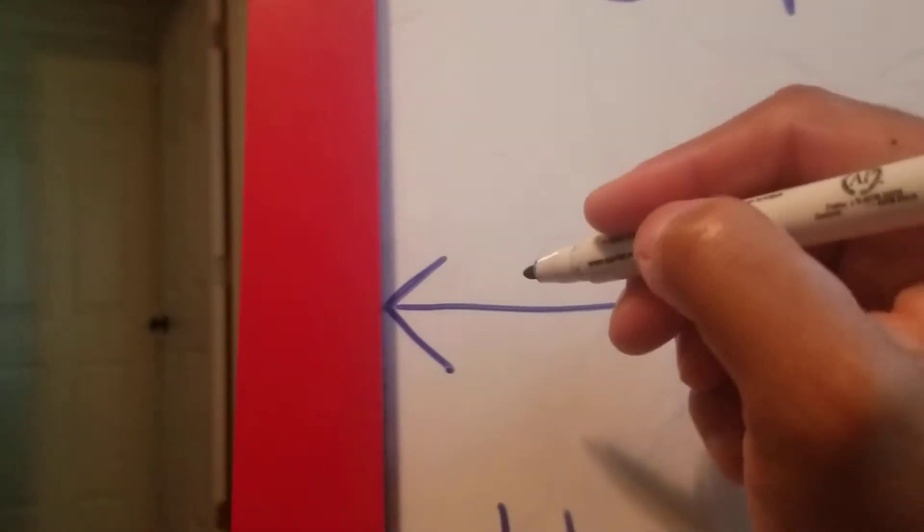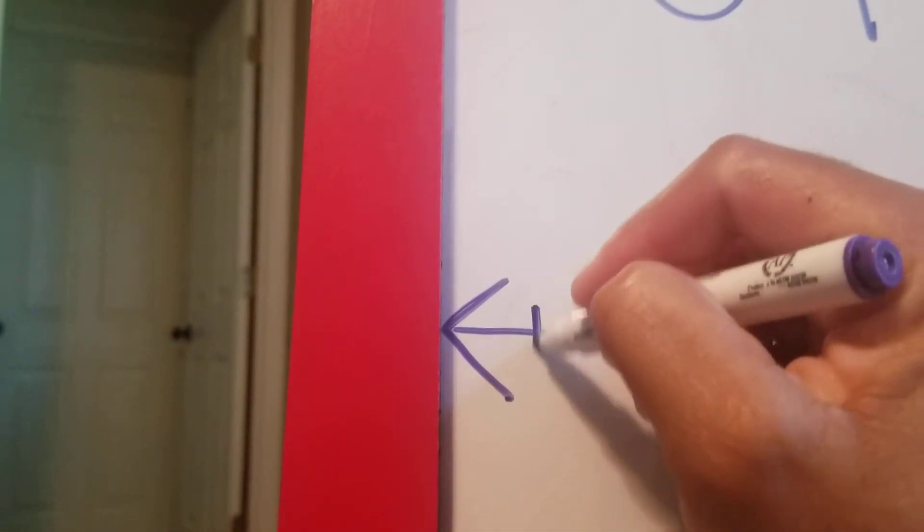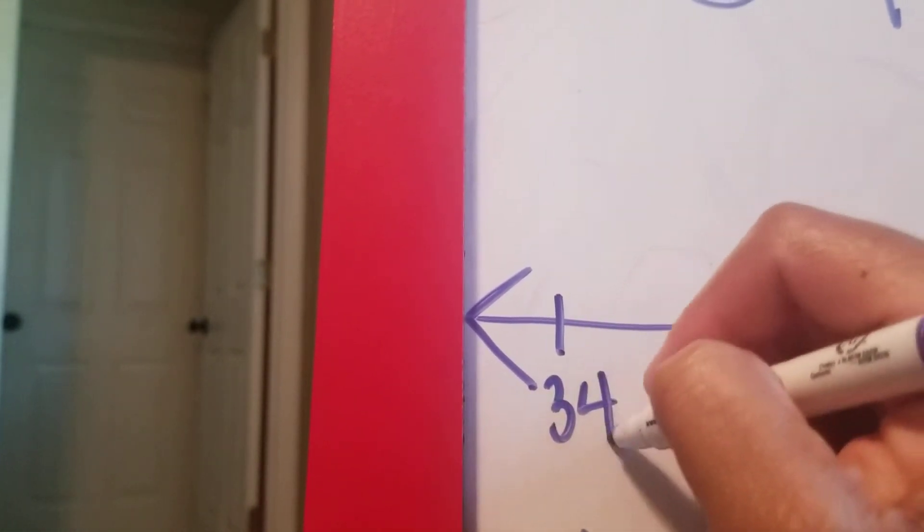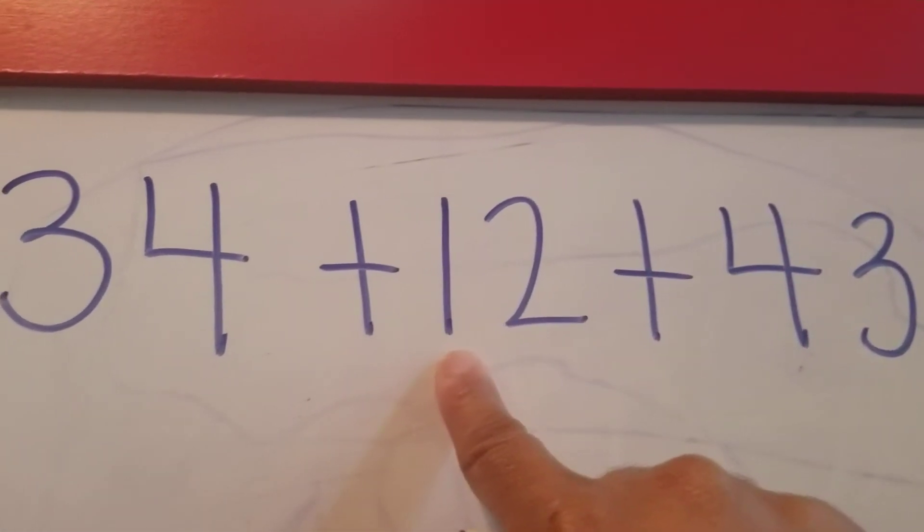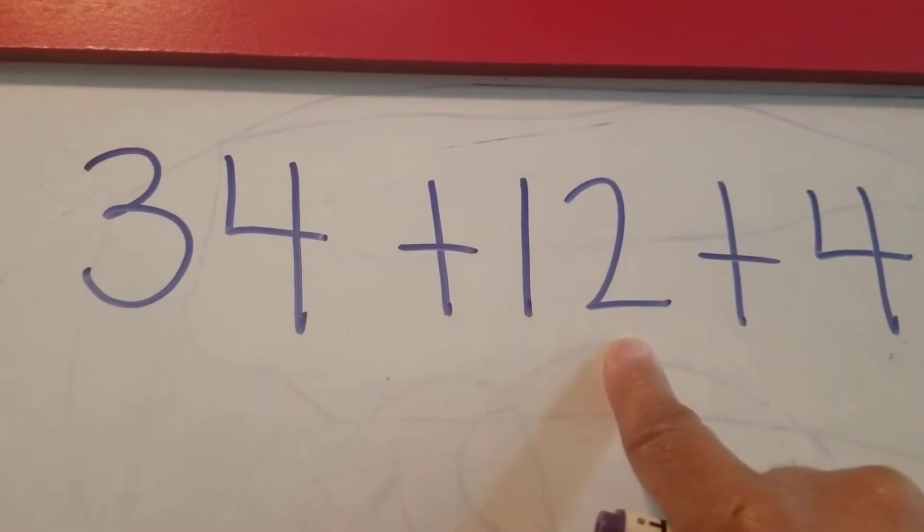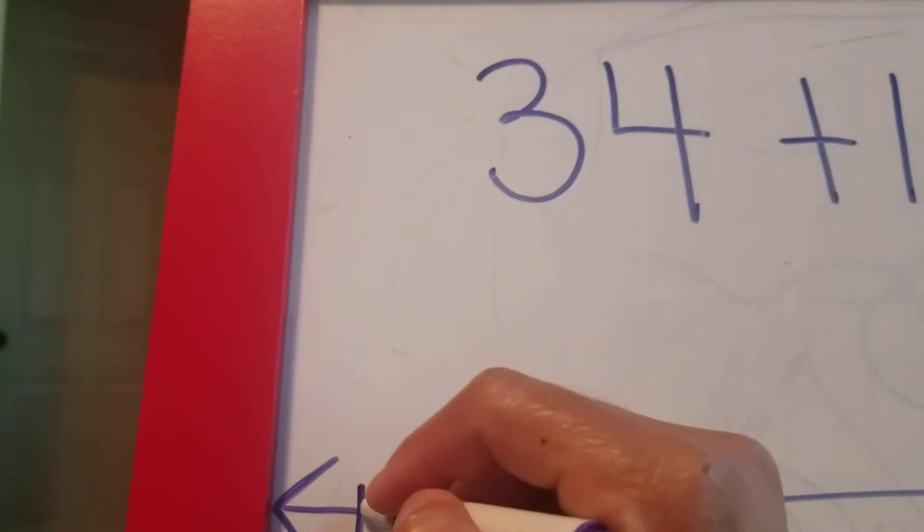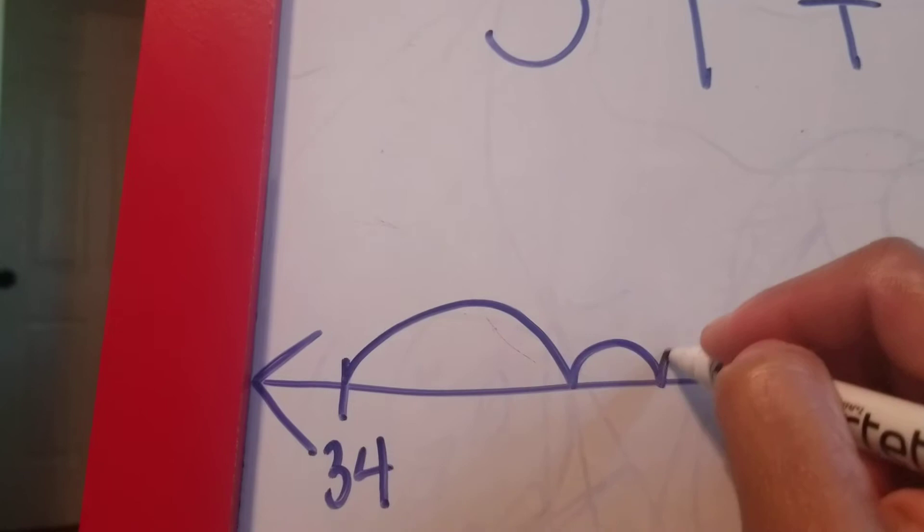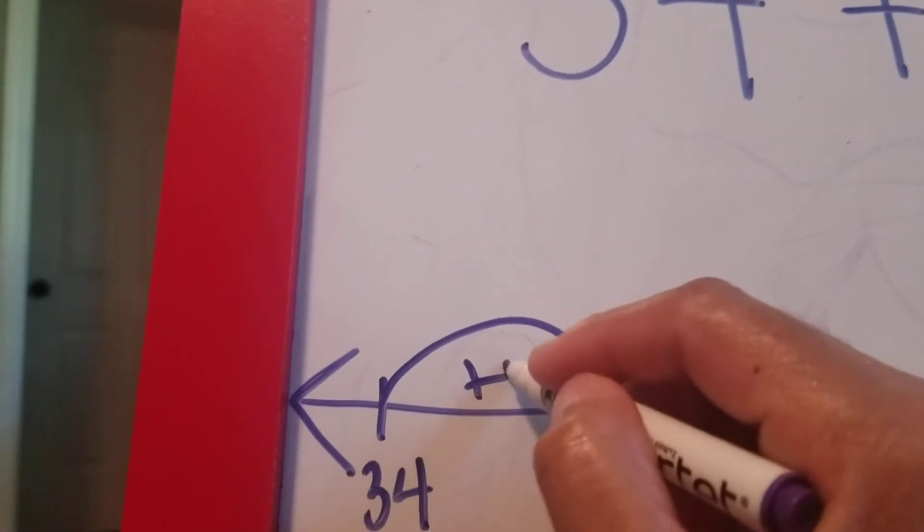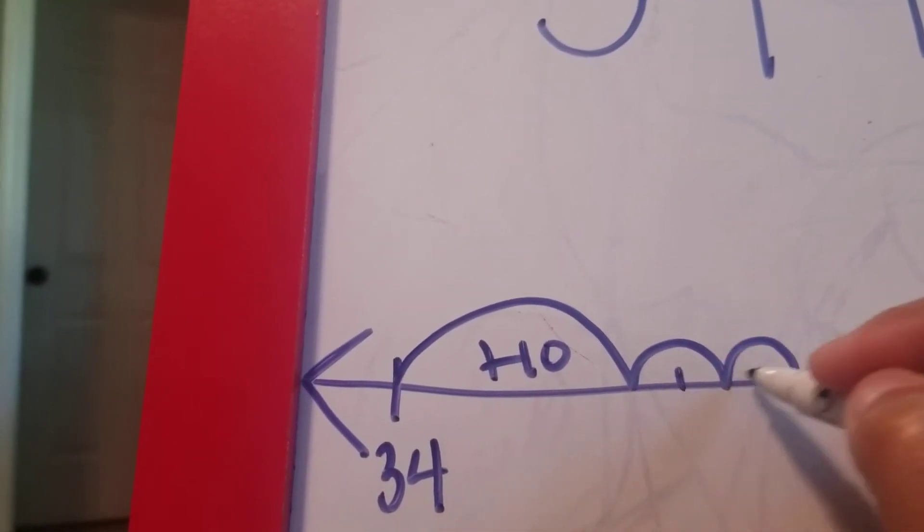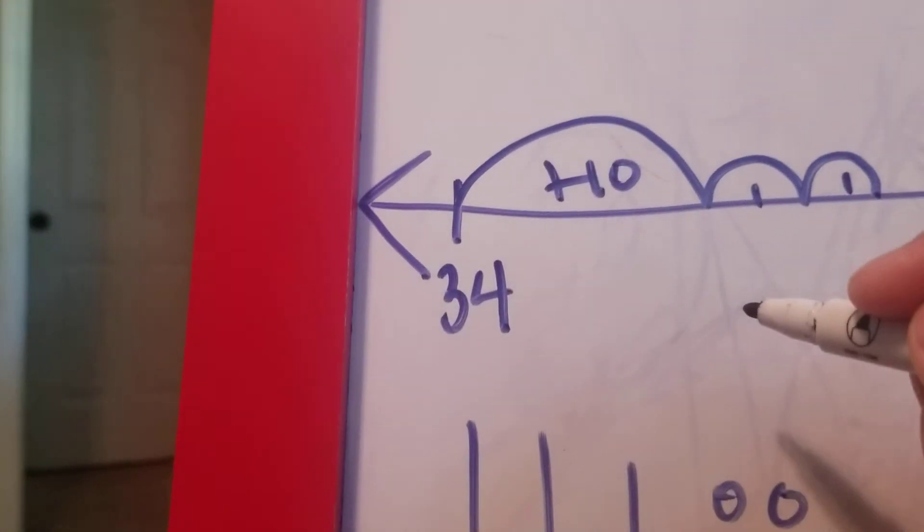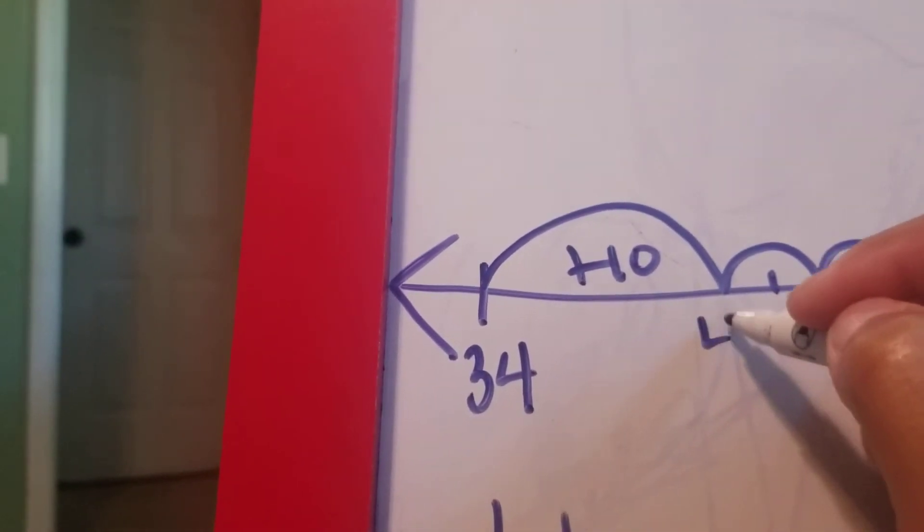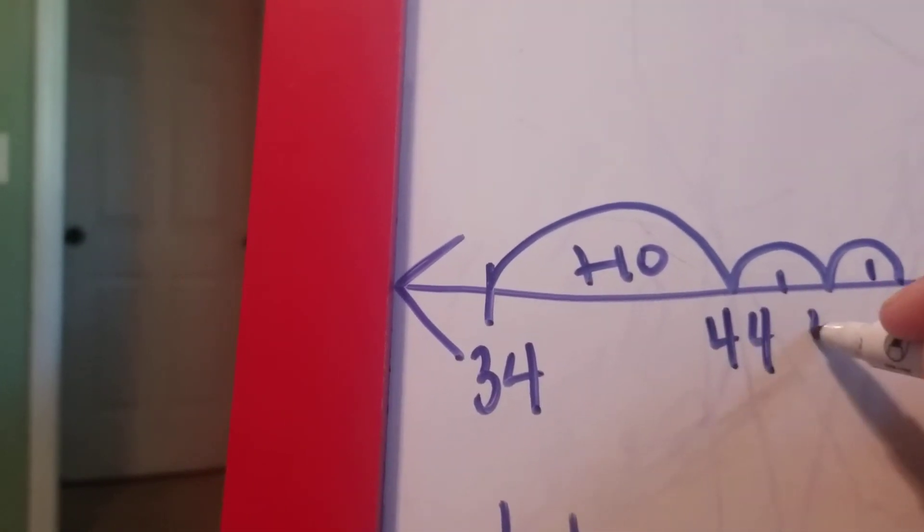The next number I'm going to add is 12, but I know that 12 has one 10 and two ones. So there's a 10 and then there's my two ones. I know that 34 plus 10 is going to be 44, plus one more is 45, and one more is 46. So that's where I am right now.